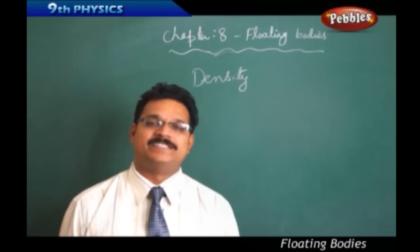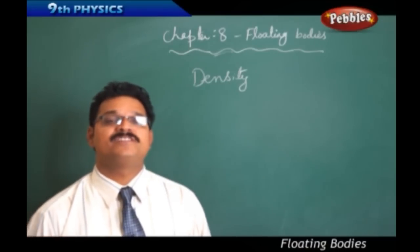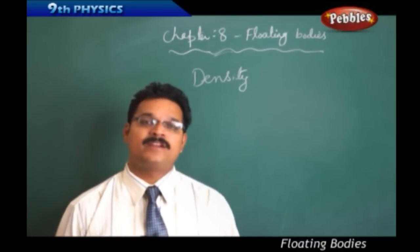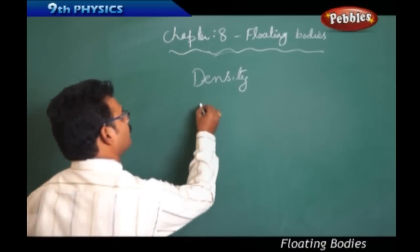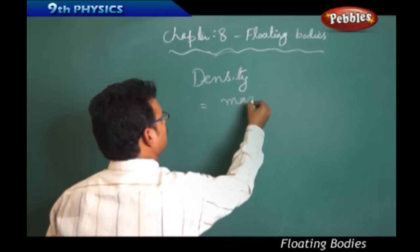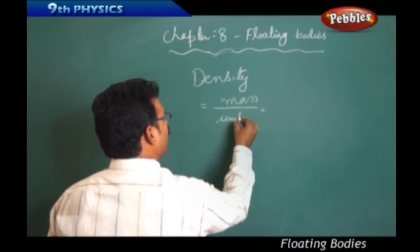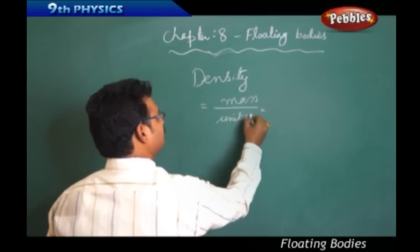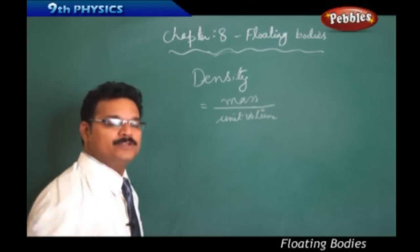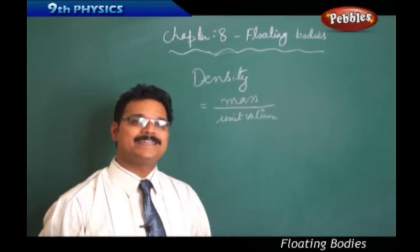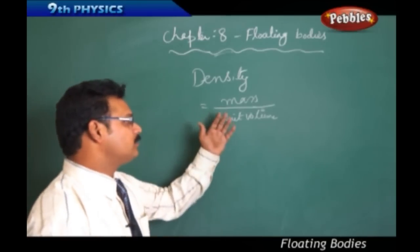What is density? Density is a physical quantity in physics. It is defined as mass per unit volume, or you can say it is the ratio of mass to volume.